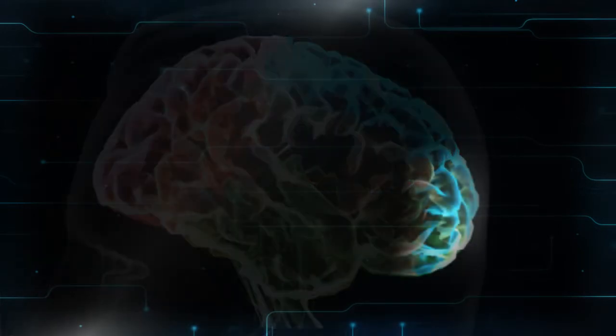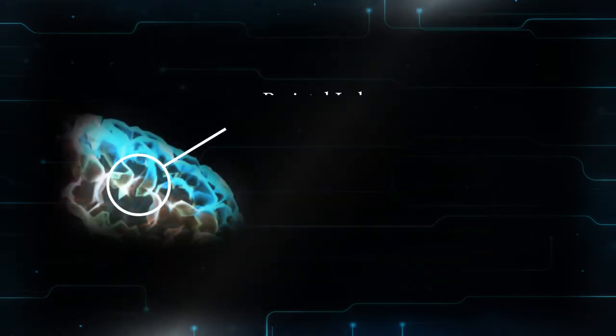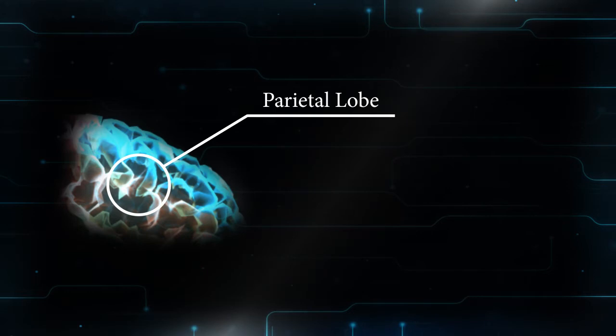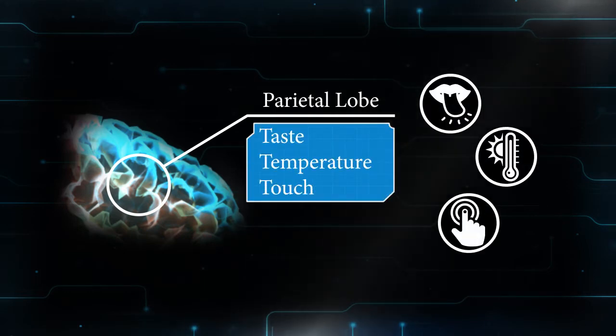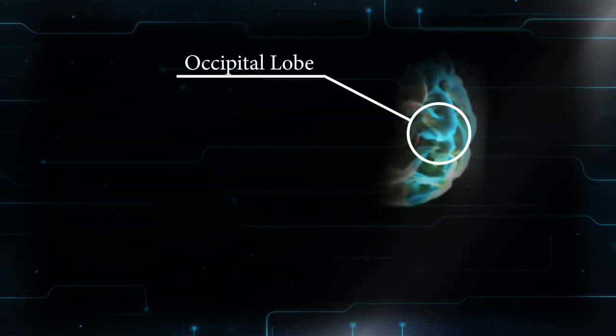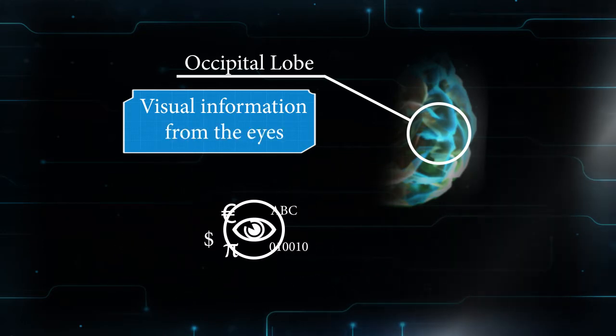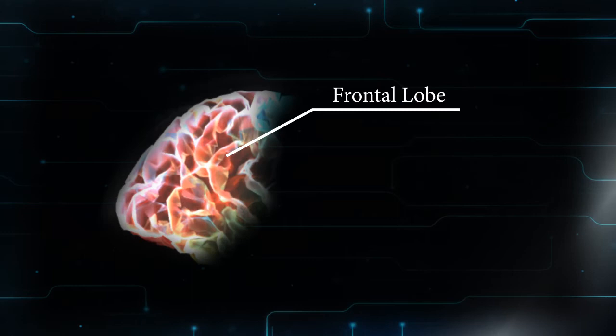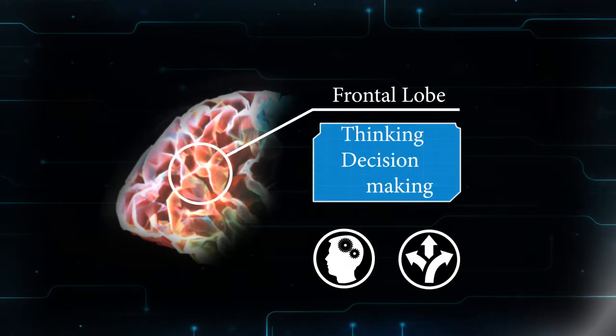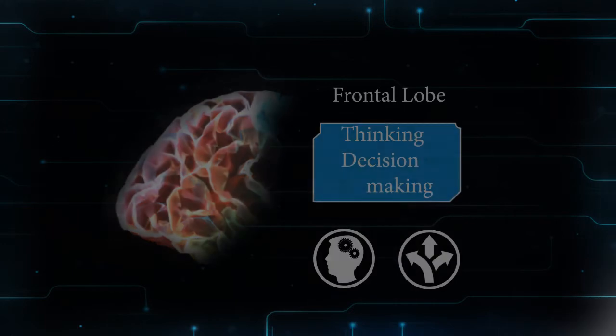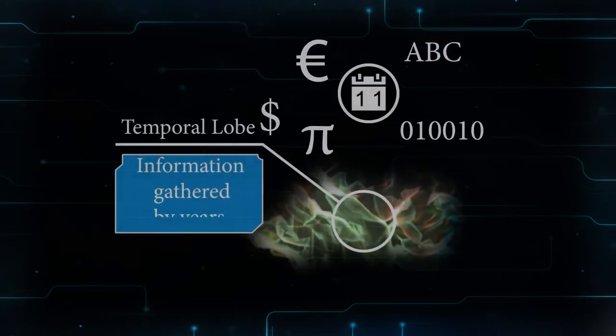It's divided into four sections called lobes. The parietal lobe processes sensory information that has to do with taste, temperature and touch. The occipital lobe is responsible for visual information from the eyes. The frontal lobe carries out higher mental processes such as thinking and decision-making. And finally, the temporal lobe is responsible for the information gathered by ears.